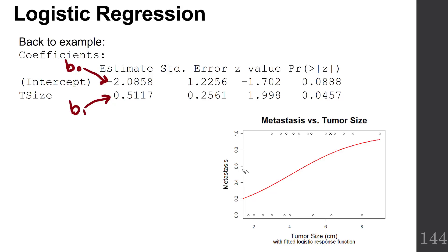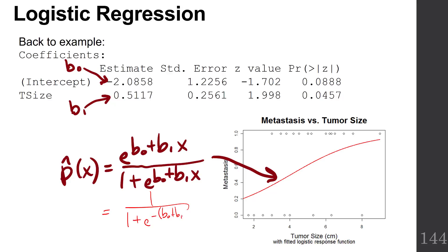So how can we estimate the probability of tumor metastasis? Well, remember we have those two formulas, either e to the beta naught plus beta 1x over 1 plus e to the beta naught plus beta 1x, or we could write that as 1 over 1 plus e to the negative B naught plus B1x. We've got those two formulas. And those are the probability of tumor metastasis, which is what our S-shaped curve is on our picture.